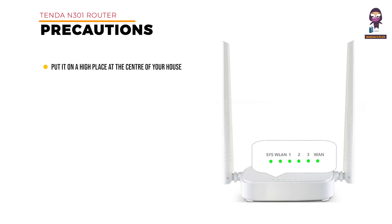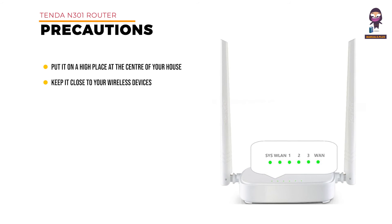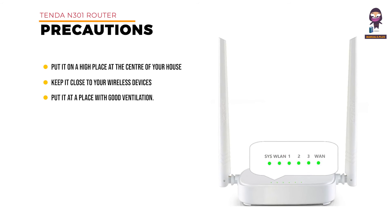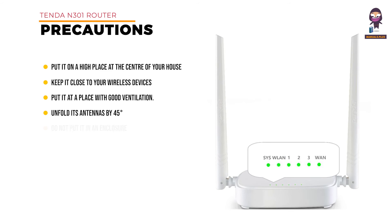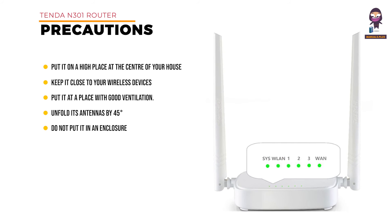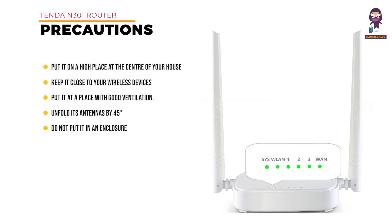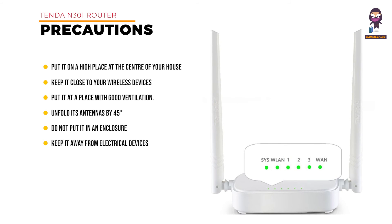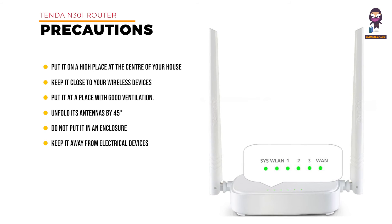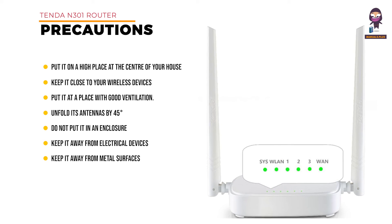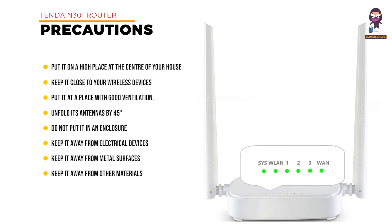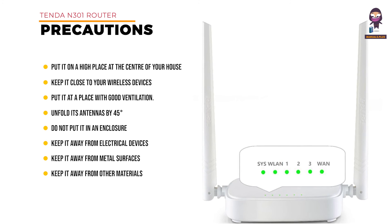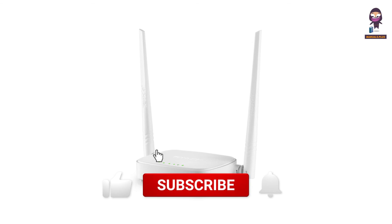Precautions: put the router in a high place at the center of your house. Keep it close to your wireless devices such as mobile phones and laptops. Put it in a place with good ventilation and unfold its antennas by 45 degrees. Do not put it in an enclosure such as a wire distribution box, shoe cabinet, or metal box. Keep it away from electrical devices such as ceiling fans and microwave ovens, metal surfaces such as metal doors or aluminium rails, and other materials that may affect your wireless signals such as glass, mirrors, and fish tanks.